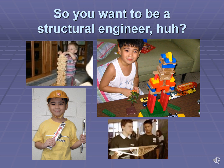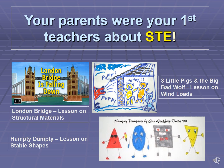So you want to be a structural engineer, huh? When you were kids, you have been building blocks like this kid, and you have been building bridges using popsicle sticks, and you have been playing with tools of a structural engineer. Do you know that your parents were your first teachers about structural engineering? Do you remember the nursery rhymes like London Bridge is falling down? It is a lesson on structural materials. The story of the three little pigs and the big bad wolf is a lesson on designing houses against wind loads. And the song Humpty Dumpty is a lesson on stable shapes.